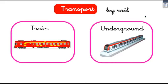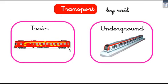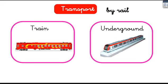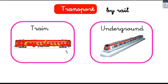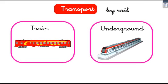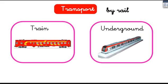Transport by rail is not so polluting. We have the big trains that can take you from one city to another, even from one country to another — they travel long distances. Some are very fast and others are not so much. We also have the underground in big cities, which also travels by rail. In general, they use electricity.